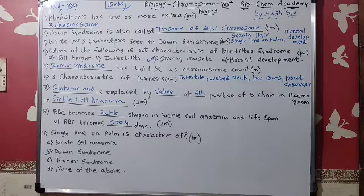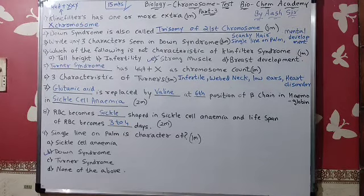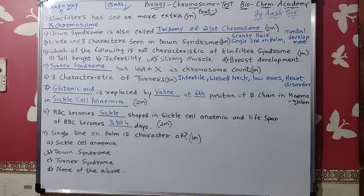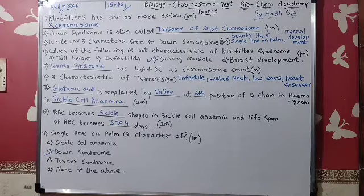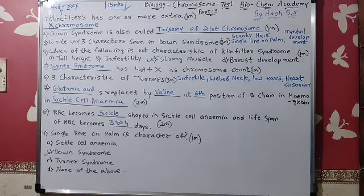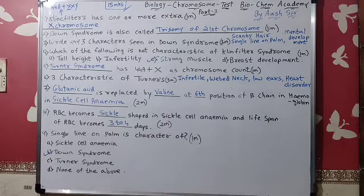Number two: Down syndrome is also called the trisomy of the 21st chromosome, because there are three copies of the 21st chromosome — hence called trisomy of 21st chromosome. Three characteristics of Down syndrome: scanty hair, single line on palm, and mental developmental issues.